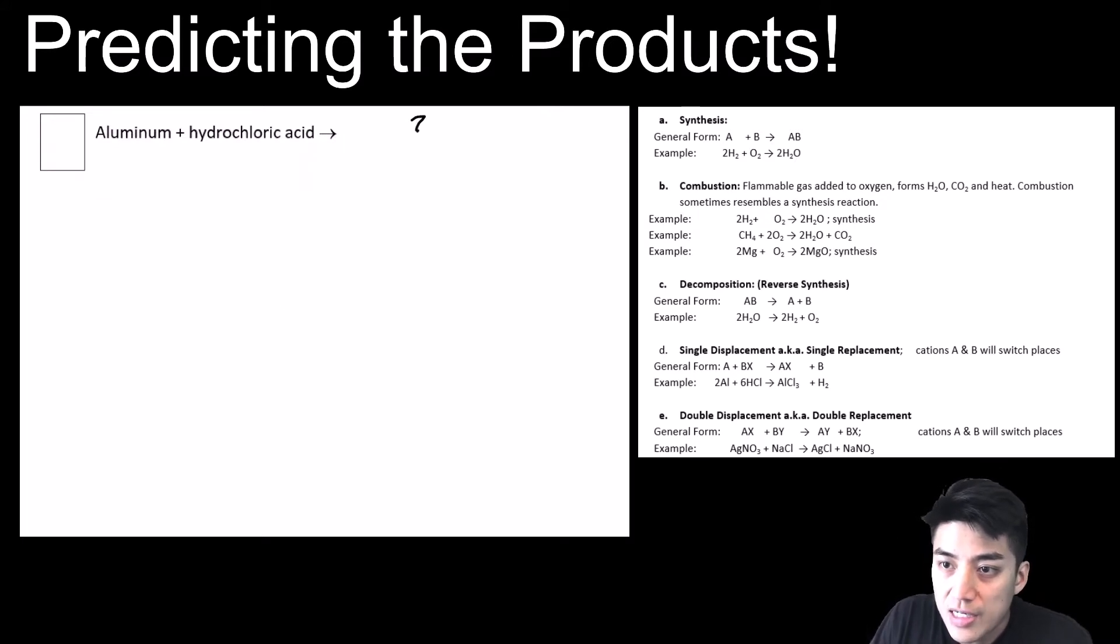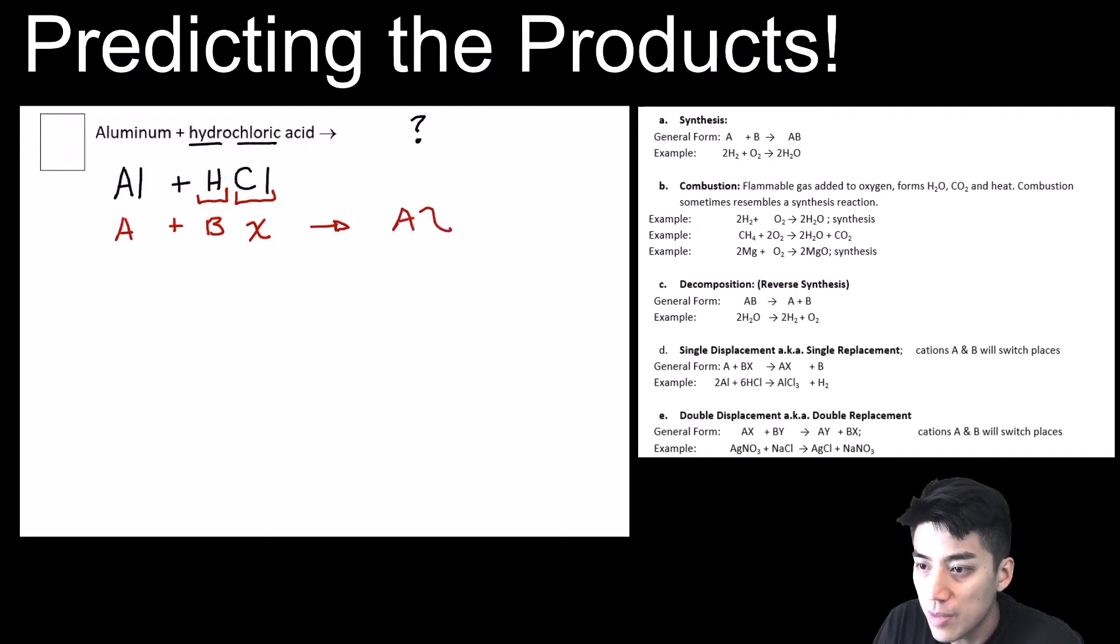Aluminum plus hydrochloric acid will yield some products, which we'll predict. So if you don't know, I mean, just start by writing something down, and it should give you more clues. So aluminum is Al. Hydrochloric is HCl, because you cross the 1 and the 1. So this looks like it's in the form A plus BX. So then I look on my notes to the right there, and it looks like it's shaping up to be a single displacement reaction. So it's going to form the products AX plus B.